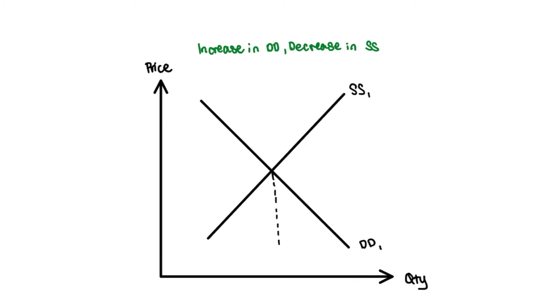Then you want to be able to label your equilibrium quantity and the original equilibrium price. Just go ahead and draw some dotted lines to your equilibrium point which is the intersection of the two curves. After which we can start to draw our new curves.